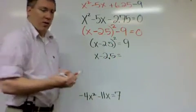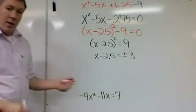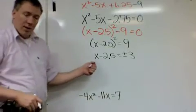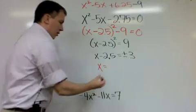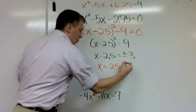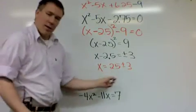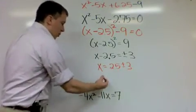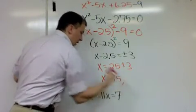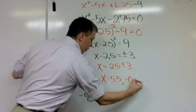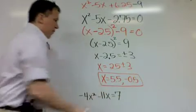whenever you're taking an even root, you have to remember, plus or minus, and I'm really close to getting to my answer. All I need to do is add 2.5 to the other side. x equals 2.5 plus or minus 3. Because they're just regular numbers, I'm going to go ahead and do the plus and then the minus. 2.5 plus 3 is 5.5, and minus 3 is negative .5.